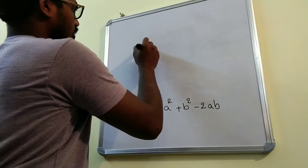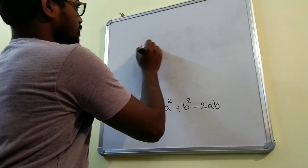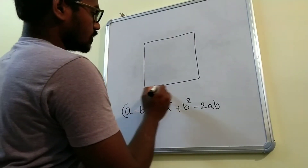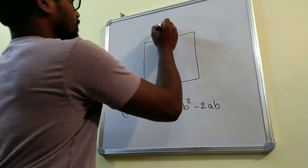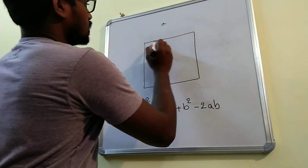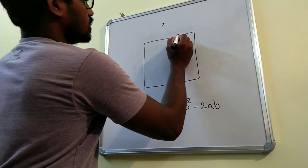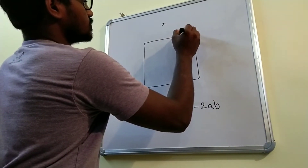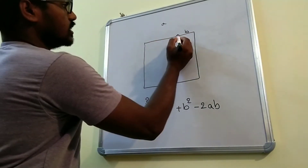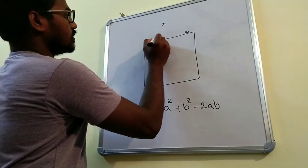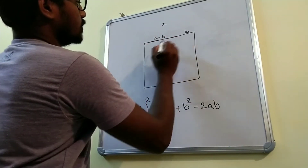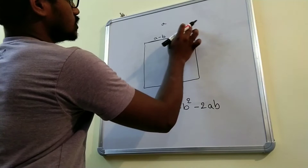First we will take a square box and let's say the length of the square is a. Let's divide these parts into two parts and make one part as b. So this whole part length is a and this small part length is b. Obviously, this length will be a minus b. So this part is a minus b and this part is b, and this whole length will be a.